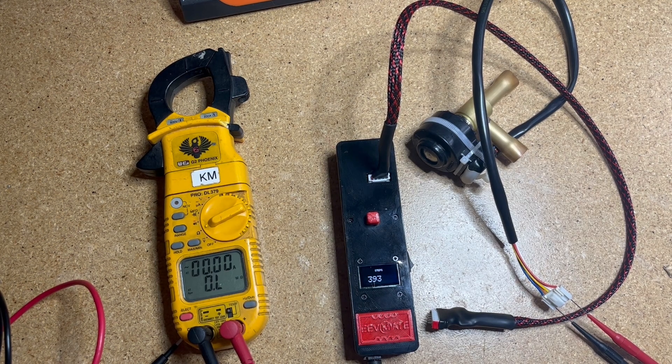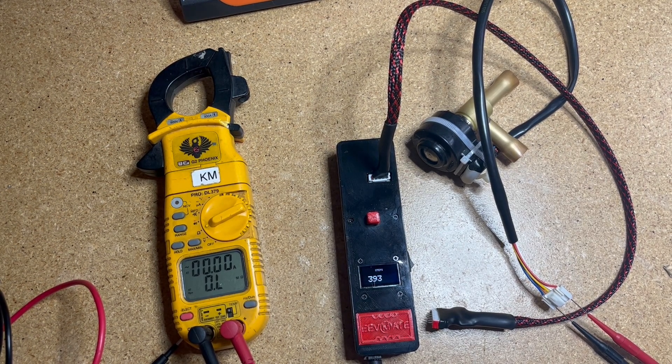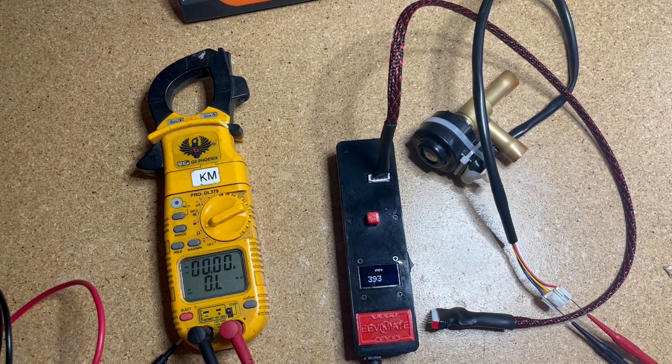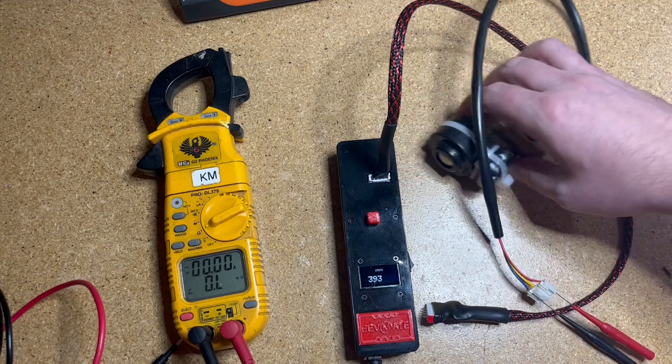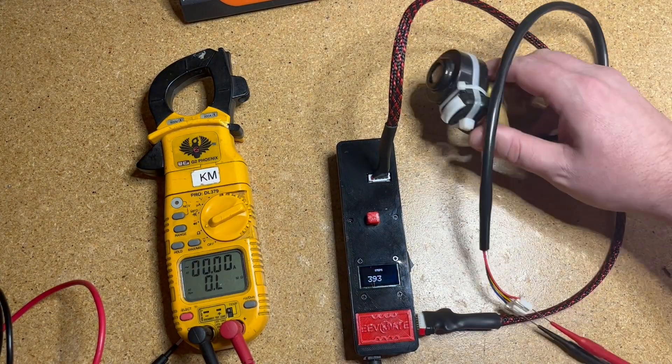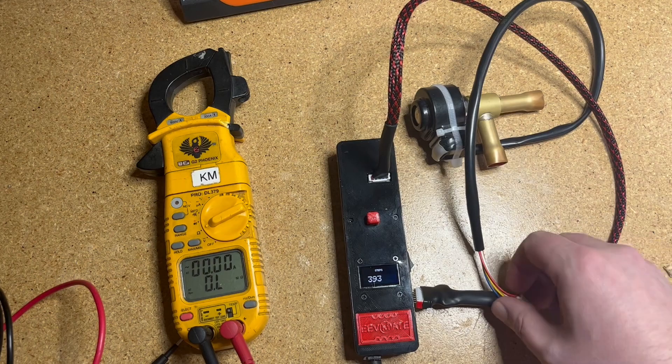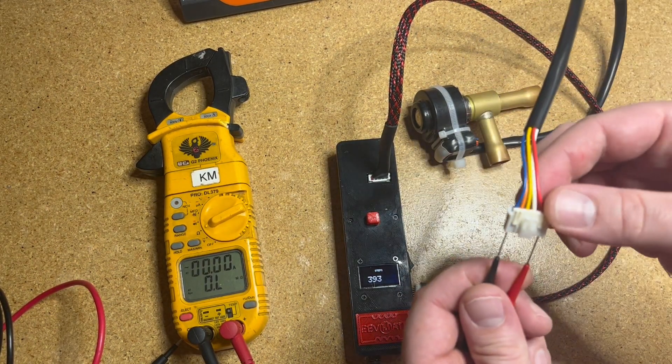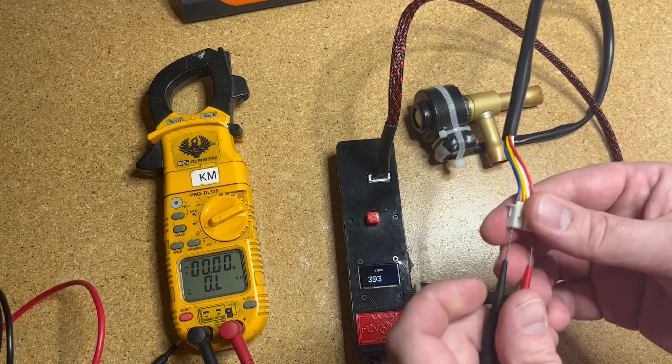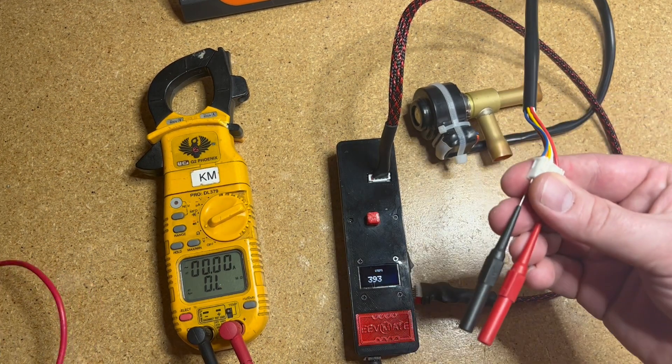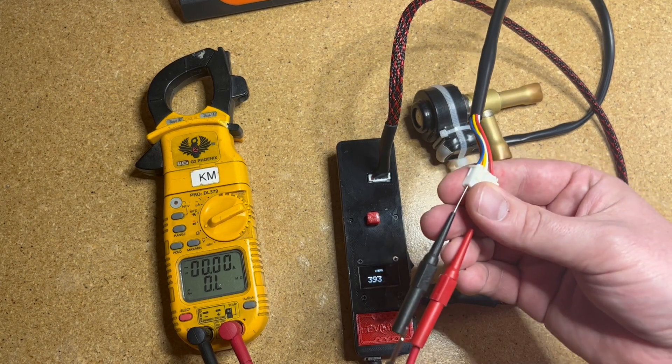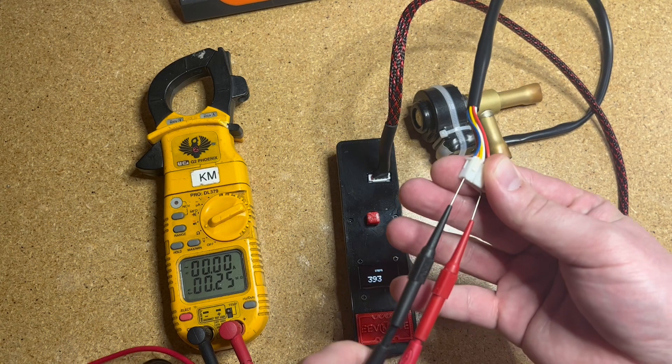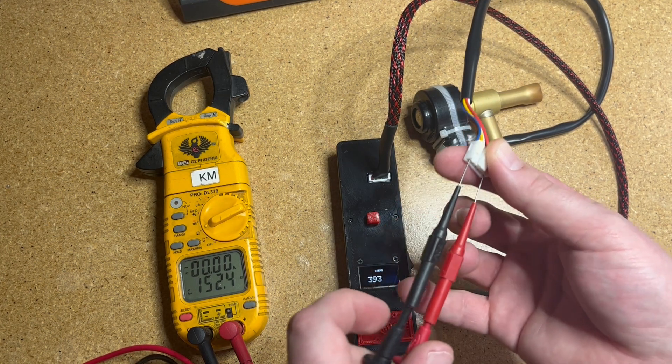First, verify that your EEV motor has good continuity between its windings. For that, you'll need meter leads. This is a five-wire motor and red is our common. The manufacturer specs say it should be about 150 ohms between the phases. From common to first phase, we can check: 150.